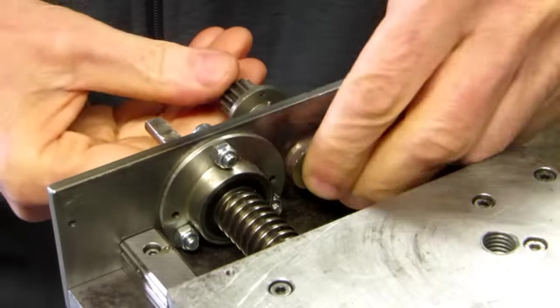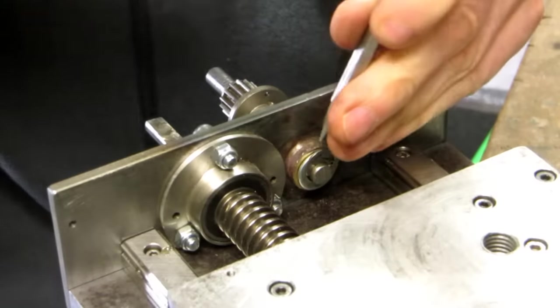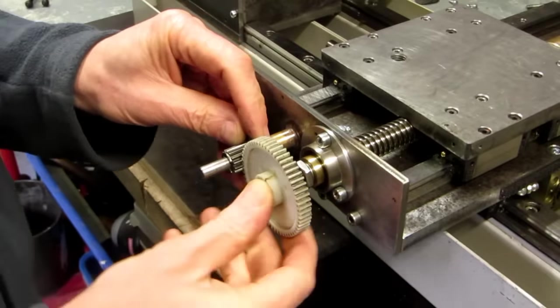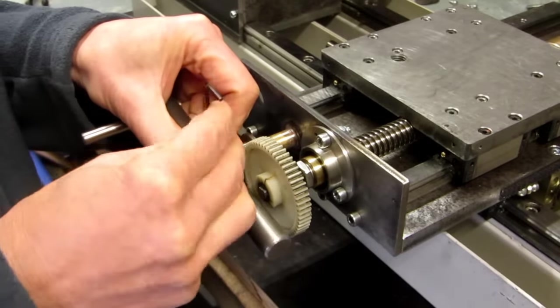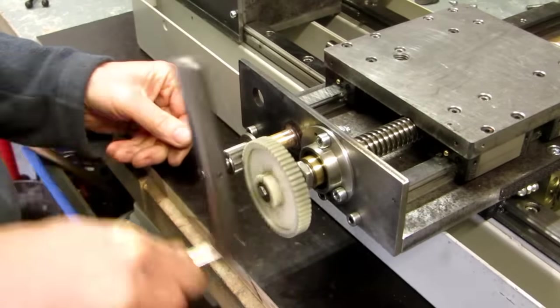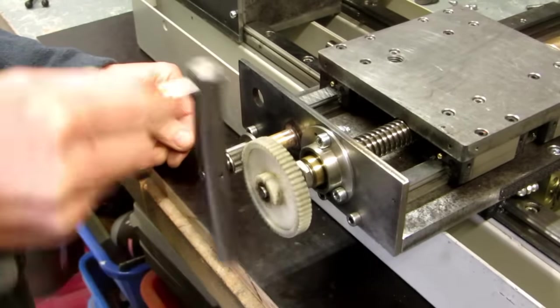The cross-slide also needs gears for moving the tool holder towards the chuck when turning the handle clockwise. For the cross-slide I used a higher gear reduction ratio to get around 1mm cross-slide movement per turn of the handle.